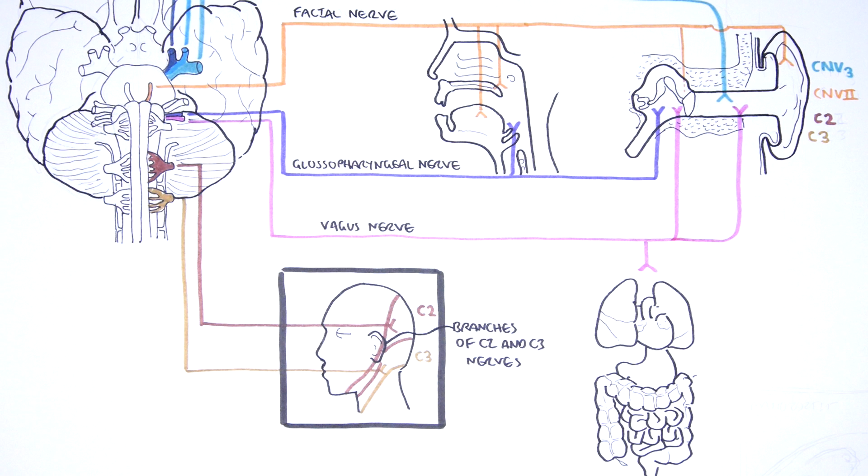In summary, the auricle is innervated by cranial nerve number five, seven, cervical spinal nerve two, C3, the external auditory meatus and canal by cranial nerves five, seven, and ten, and the middle ear, including the tympanic membranes by cranial nerve ten and nine.